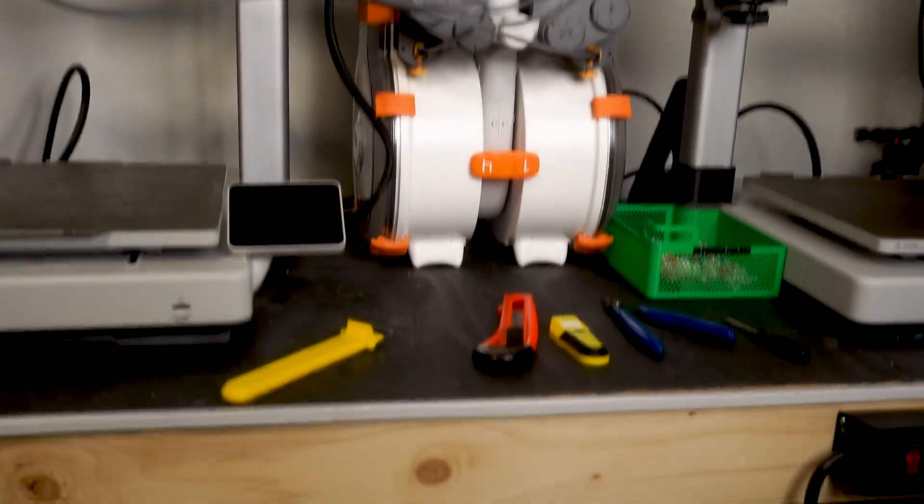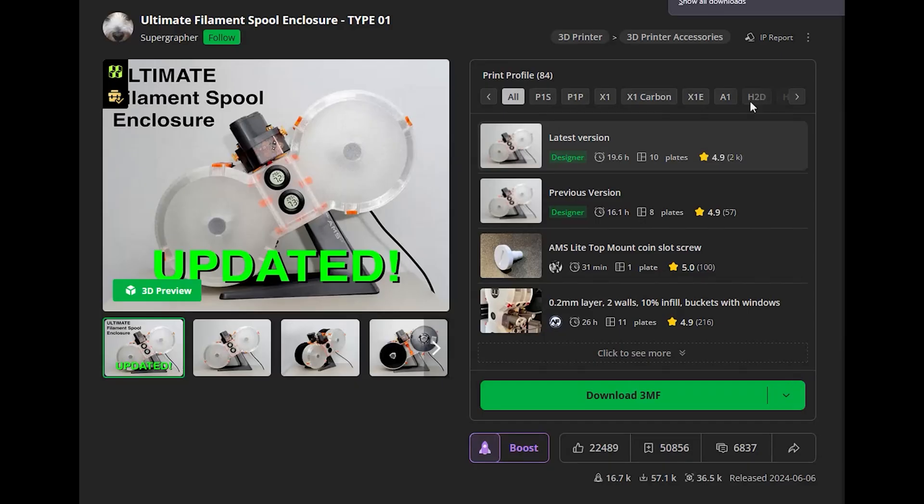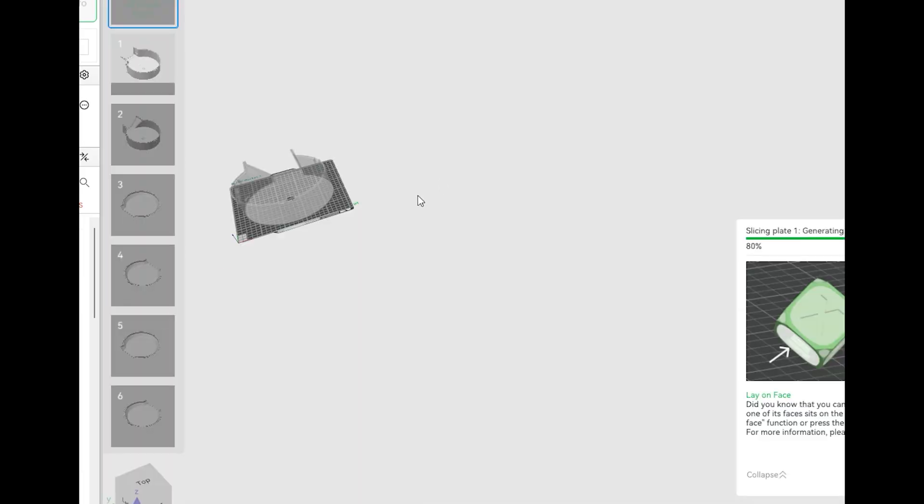The price on Amazon is $89.99 USD, which is a little bit more than the enclosure you can print yourself when you consider the cost of filament and all the accessories you need to buy.